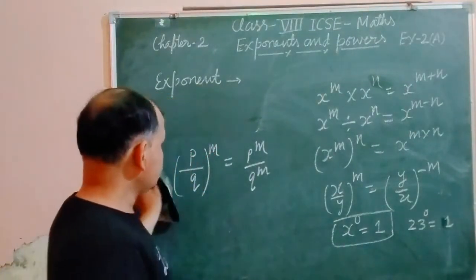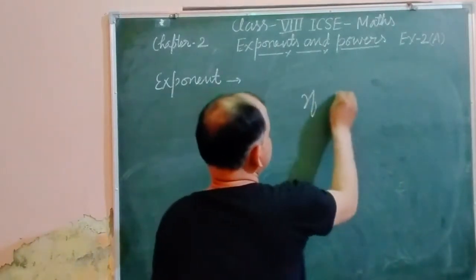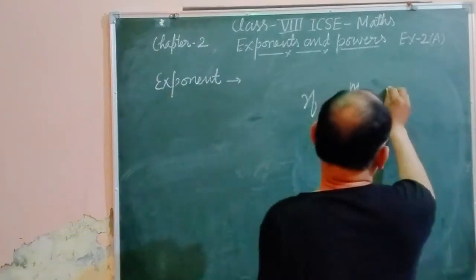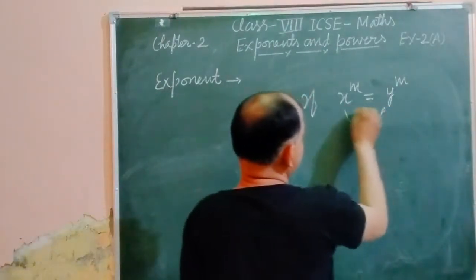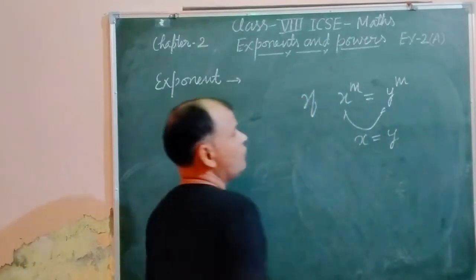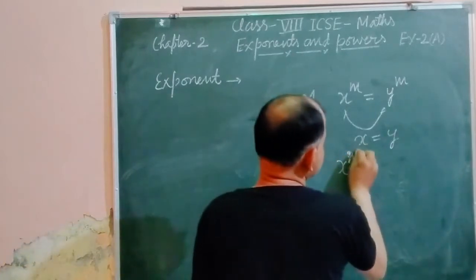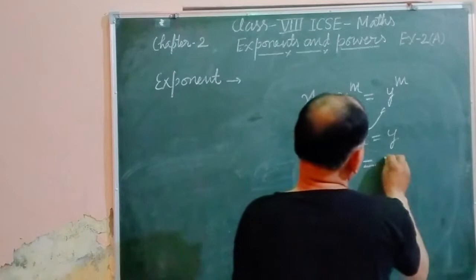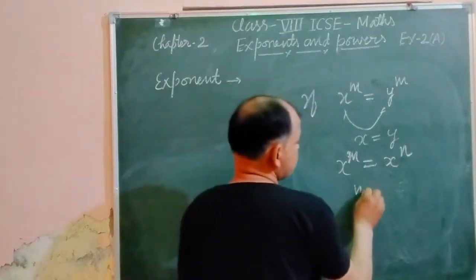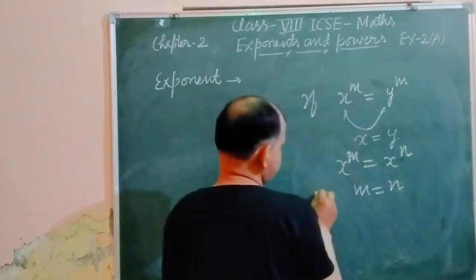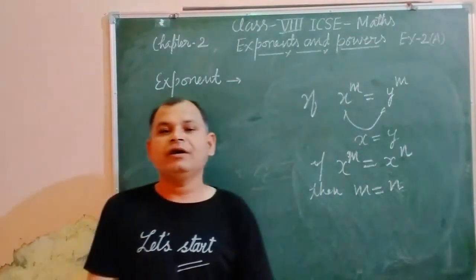If x to the power m equals y to the power m, and the powers are the same, then we can compare their bases, so x equals y. If x to the power m equals x to the power n, and the base is the same, then we can compare their powers, so m equals n. These conditions must also be followed when solving the exercise.